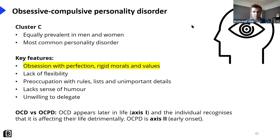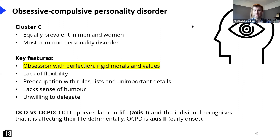OCD and OCPD are different. OCD is an Axis 1 disorder — the individual develops it later in life and recognises it is affecting their life detrimentally; they may become emotional and seek help. OCPD is Axis 2 — it occurs much younger, is chronic and unwavering, and the individual may lack the insight to recognise its impact on their relationships and work. It's important to be aware of these differences.